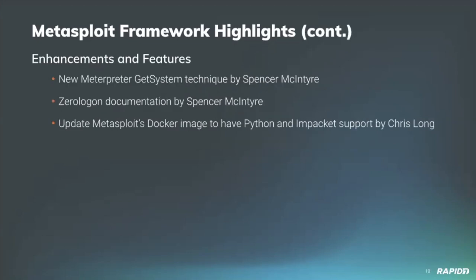For enhancements and features, Spencer McIntyre has made improvements to Meterpreter's getsystem command to support a new RPCSS variant of named pipe impersonation — we'll have a demo of this later. Spencer has also updated the ZeroLogon documentation to detail how to use the new Windows secrets dump module to form a complete attack chain without relying on tools such as Impacket. Community member Chris Long has updated Metasploit's Docker image to include both Python and Impacket so modules that rely on that functionality now work out of the box.